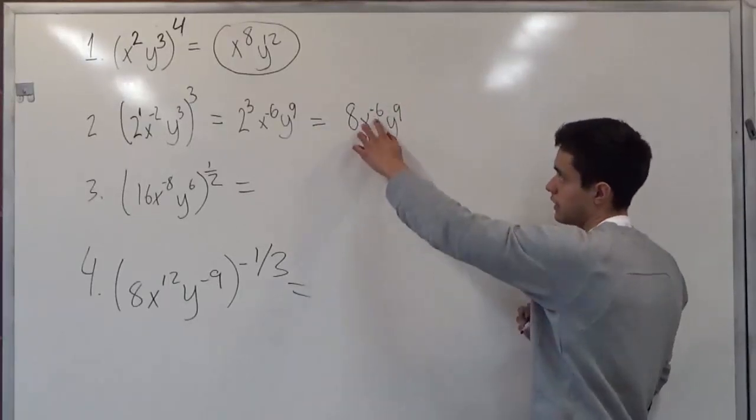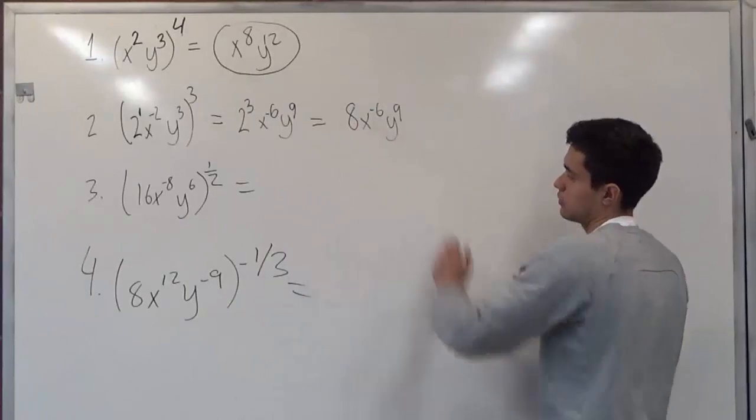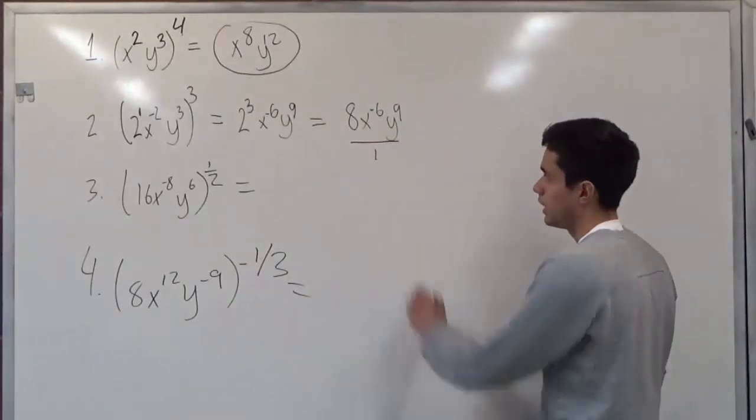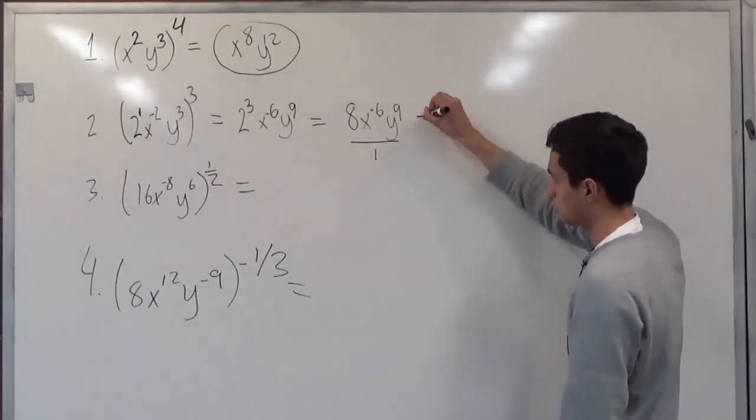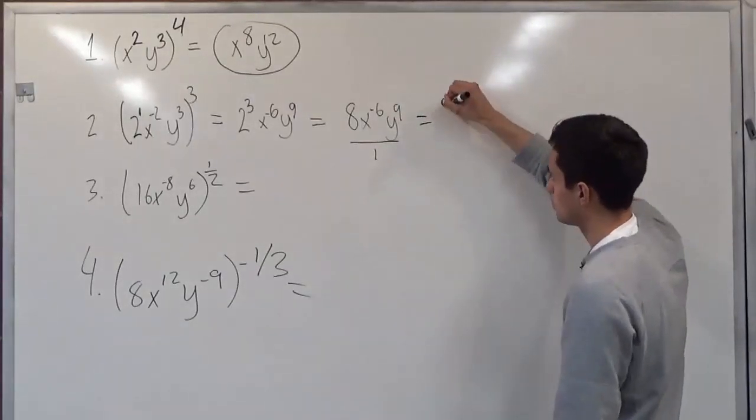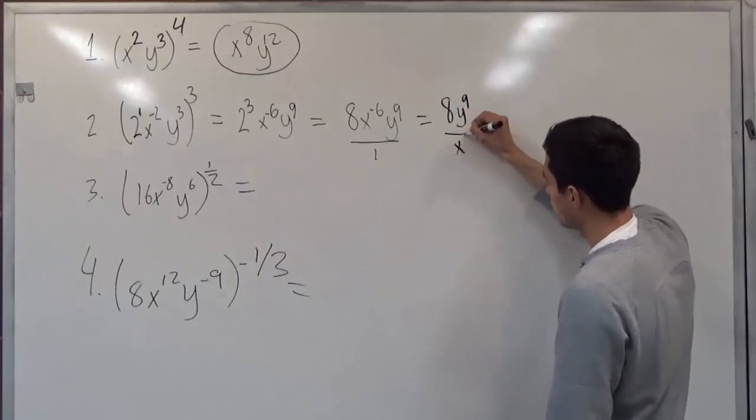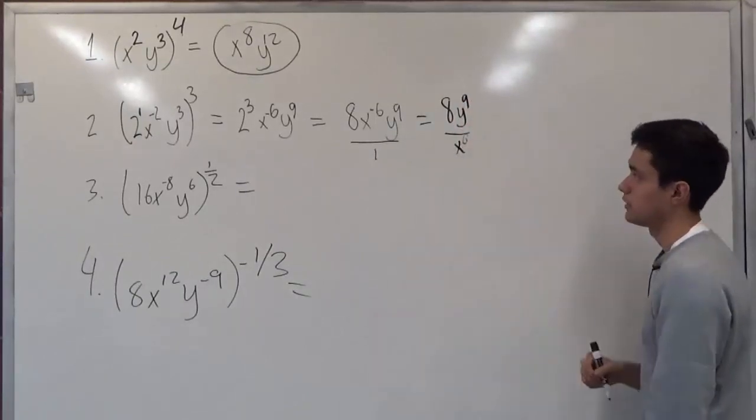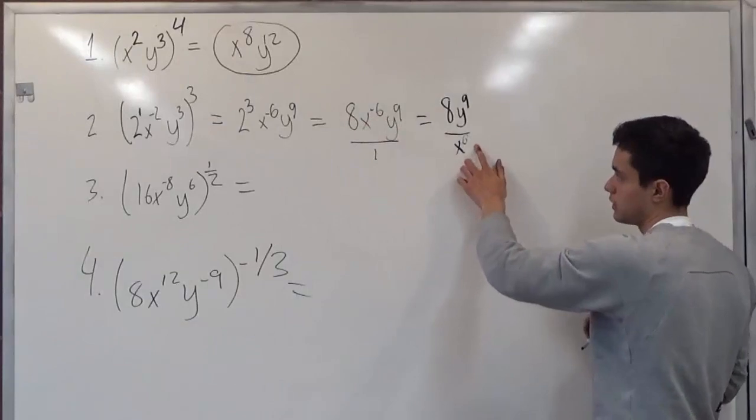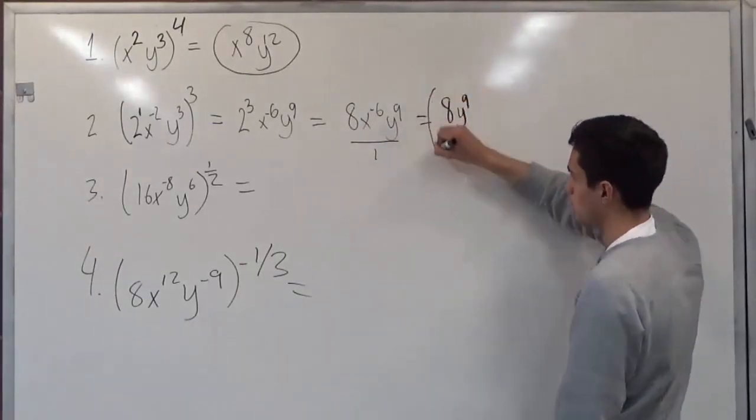However, this has a negative. So let's make this as a whole, remembering that there is 1, and we make the switch. And that will then give us 8y to the 9th over x to the 6th, and this becomes positive. So it is no longer negative at the top, but instead positive. And this would be our answer for number 2.